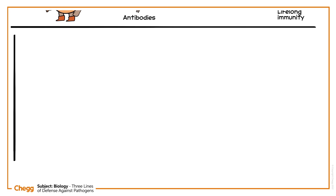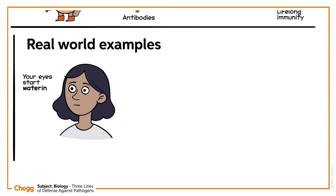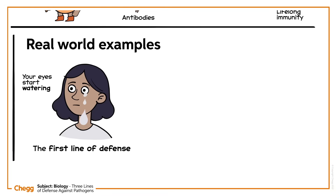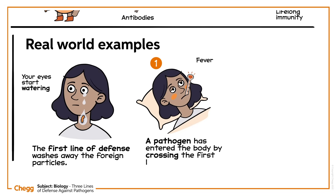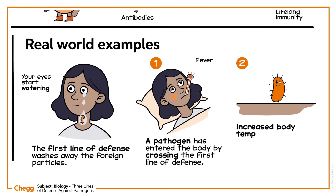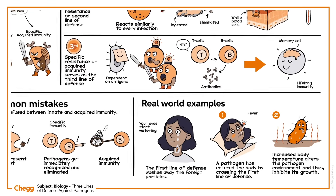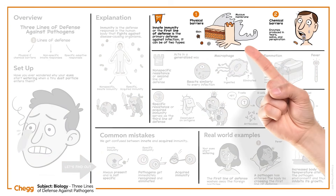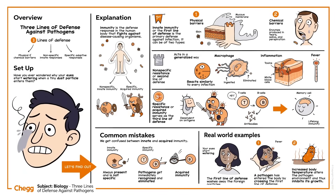Let's take some real-world examples. Now do you understand why our eyes start watering when any foreign particle enters them? It is the first line of defense that comes into action and washes away the foreign particles. When you suffer from fever, it happens when a pathogen has entered the body by crossing the first line of defense. Increased body temperature during fever alters the pathogen environment and thus inhibits its growth. To sum up, physical and chemical barriers, non-specific innate responses, and specific adaptive responses are the lines of defense that protect our body from any foreign pathogen and keep us healthy.